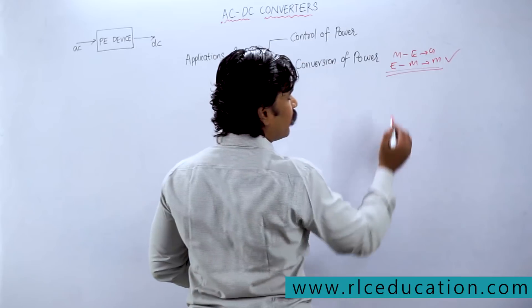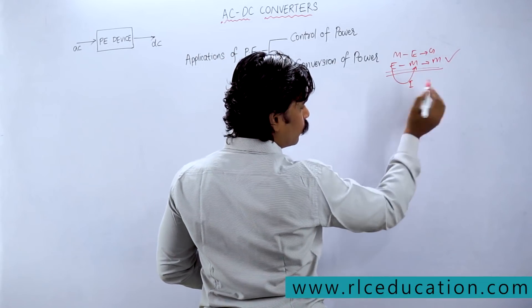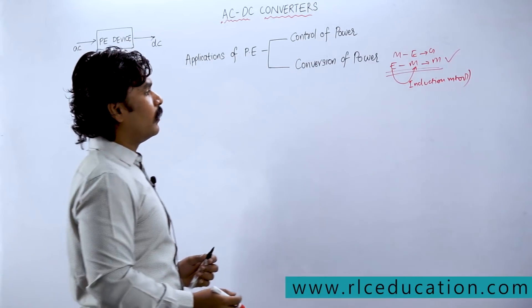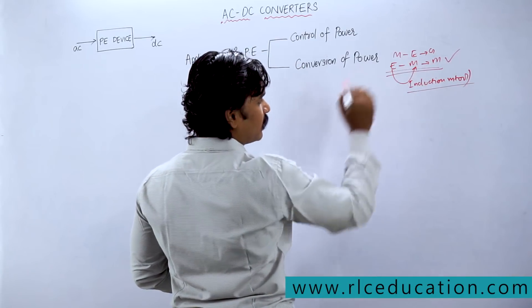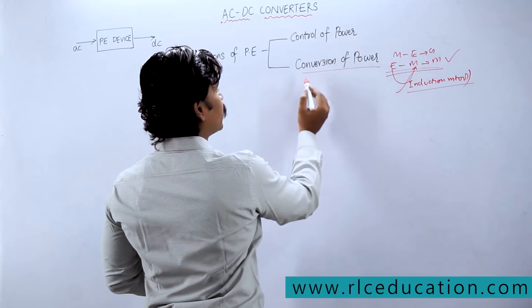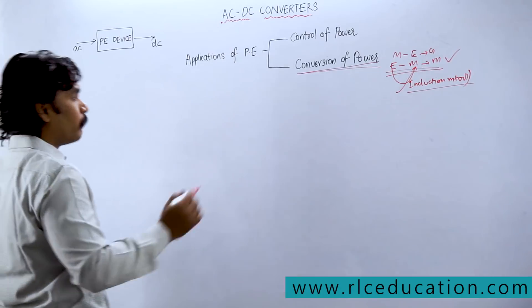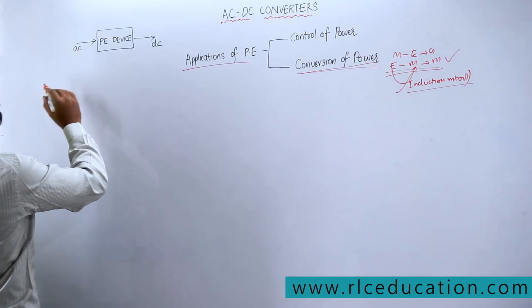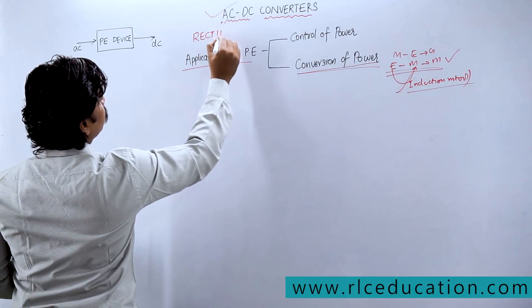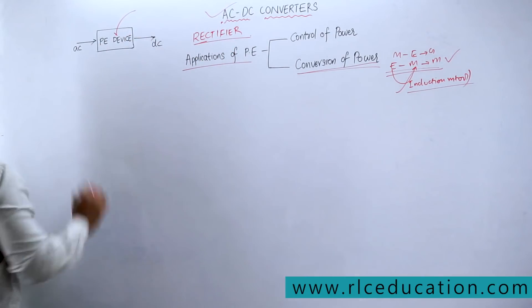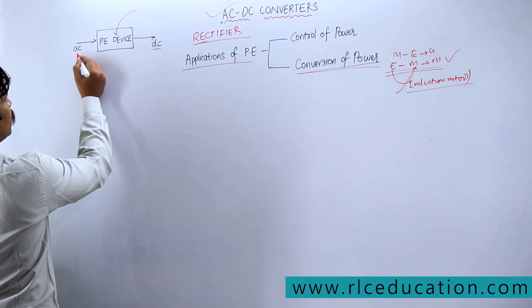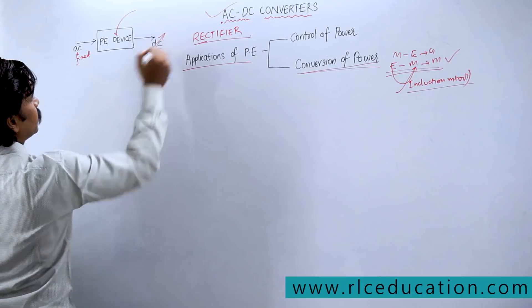Around 75 to 90 percent of the load on the power system is a motoring load, meaning the majority of energy is converted from electrical to mechanical using induction motors — the popular workhorse of the industry. In order to improve the efficiency of energy conversion, we require a power electronic device. In that series, you have a special converter called an AC-DC converter, also called a rectifier.